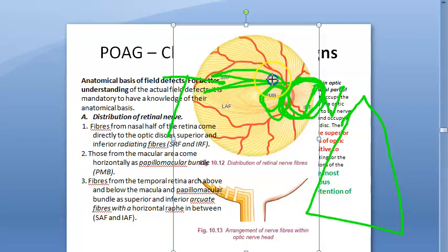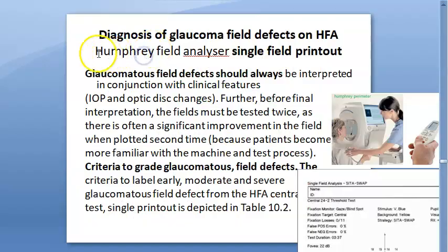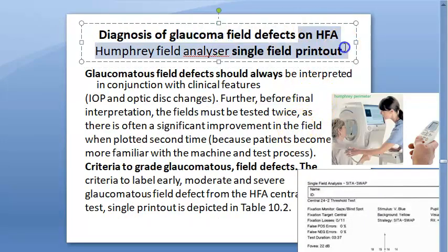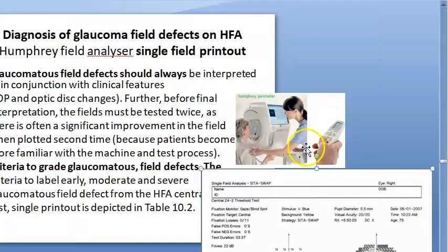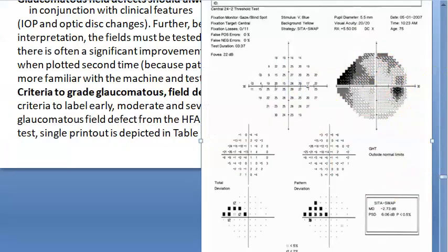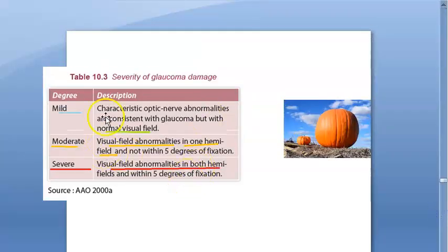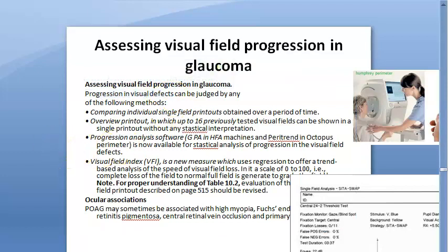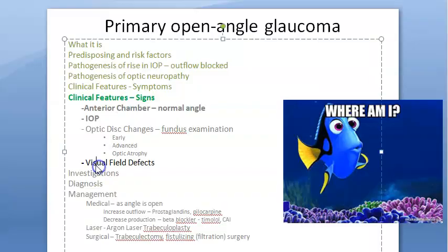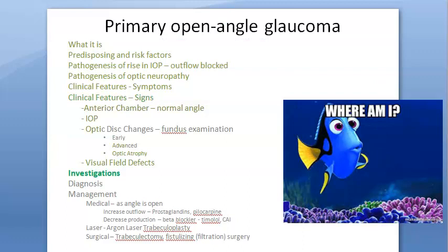Humphrey's Field Analyzer (HFA) single field printout is used to analyze the visual field. Clinicians correlate the results and grade severity of glaucoma: mild means normal visual field; moderate means visual field abnormalities in one hemifield; severe means visual field abnormalities in both hemifields and within 5 degrees of fixation. Progression in visual field effects is analyzed using printout comparisons.